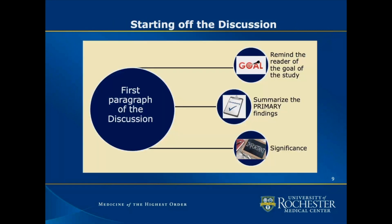The discussion is typically written last because you can only do so after the story — the results — is written. Starting the discussion can feel overwhelming since you're not just discussing data but going deeper. To help, start with a first paragraph that grounds the reader by reminding them of the goal or purpose of the study, which is what you presented at the end of the introduction. Then summarize the primary findings, recycling the summary sentences from each results section. Then address the significance of these findings — what does this do for the field, what new knowledge are you contributing?